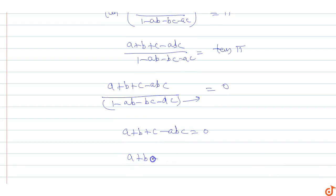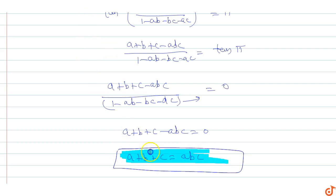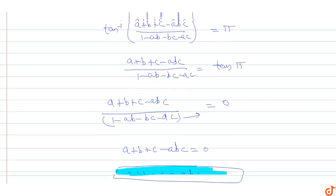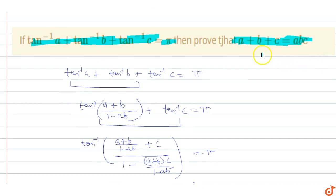So a plus b plus c equals abc. We have proved that if tan inverse a plus tan inverse b plus tan inverse c equals pi, then a plus b plus c equals abc. This is the answer for this question.